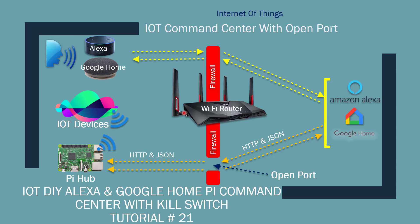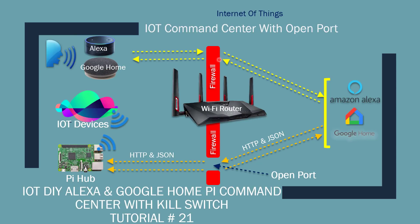The first image you see is probably similar to one of the tutorials I did earlier with the PI. The idea is for the IoT command center — if you were able to open up your firewall port, we will be using this scenario. Basically, Alexa, Google Home, or whatever other services you have, they will go over the firewall, get processed in the cloud, and then come back. If you have your firewall router port opened up, it'll go back to your PI hub. This is a very simple scenario if you have access to your router settings and can change them.